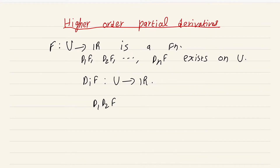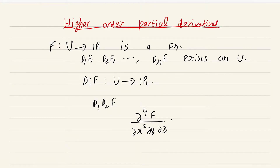In a standard multivariable calculus course at the undergraduate level, you must have definitely come across horrible expressions that look something like: del^4 f by del x^2 del y del z. This is a typical expression that says you first differentiate with respect to z, then with respect to y, then with respect to x, then again with respect to x. I am going to assume that you are familiar with such notations, and I am not going to use such notation in this course.